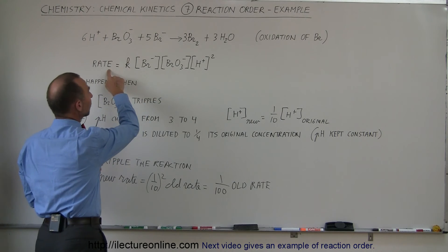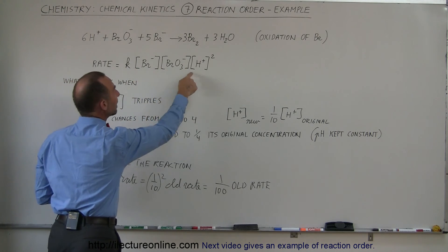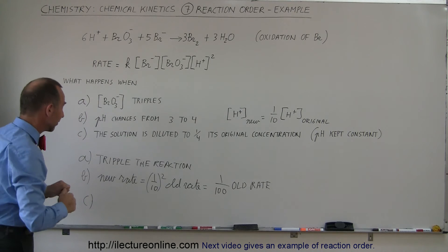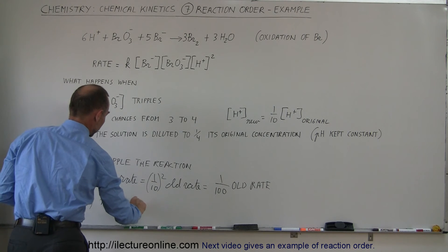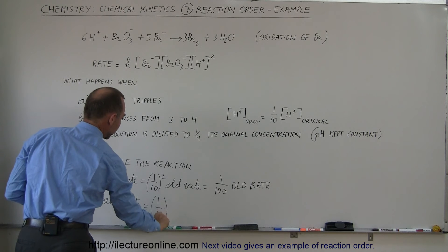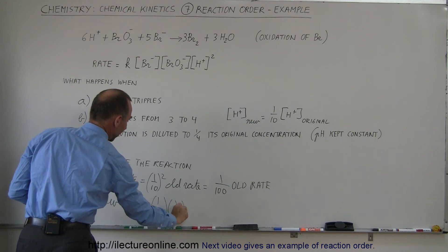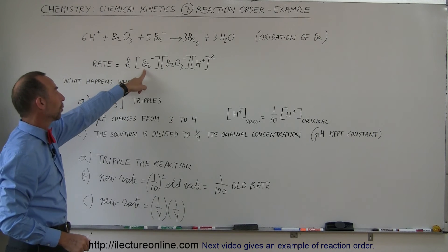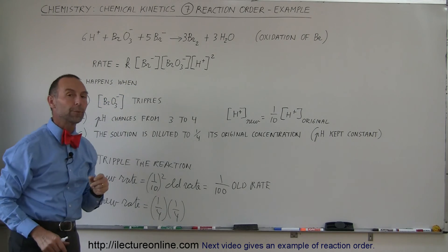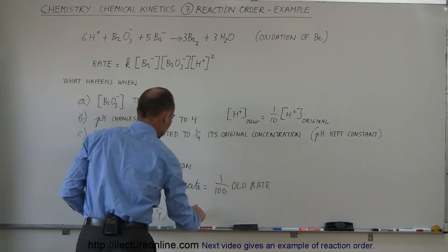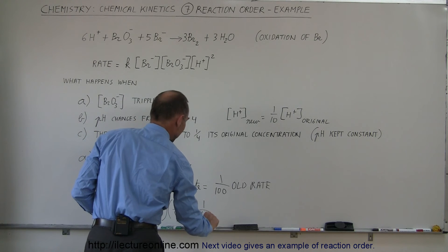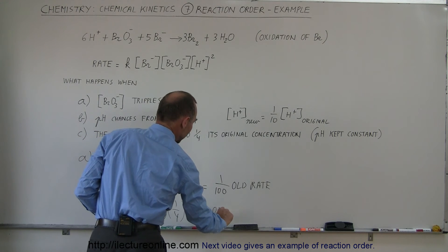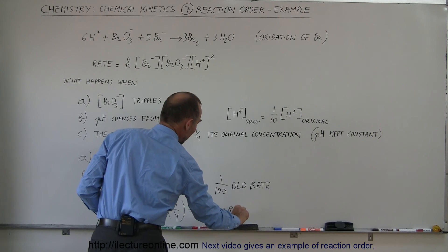But since the rate is the product of the concentrations, we can then say that the new rate is equal to 1/4 times 1/4. We have to account for each of the changes. 1/4 for bromine ion, 1/4 for bromate ion. So now the reaction rate will be 1/16 the old rate or the original rate of reaction.